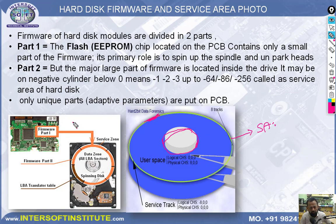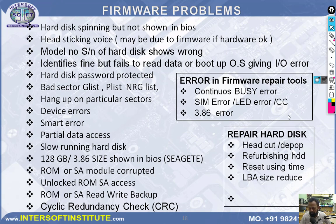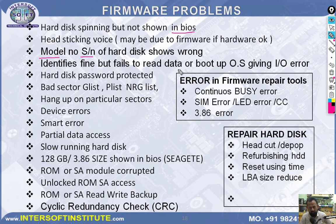Only unique parts are on the ROM; other parts are addressed to be read from the service area. Part 1 and Part 2 are both important — if both are readable, the hard disk will detect in BIOS. Common firmware-related issues: hard disk spinning but not showing in BIOS; head sticking with tick-tick voice possibly due to firmware; model number or serial number showing incorrectly; firmware corruption causing IO error; not initialized errors; hard disk password protection where user forgot the password — recoverable via firmware. The main firmware work involves bad sector lists: G-list, P-list, and NRG-list.